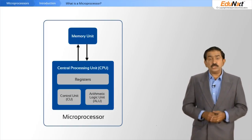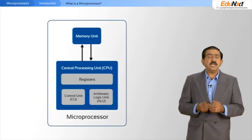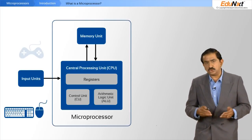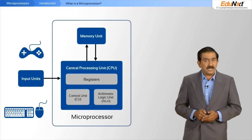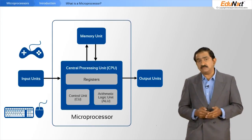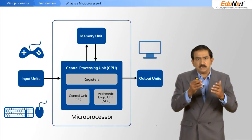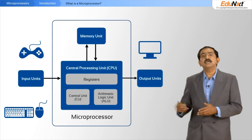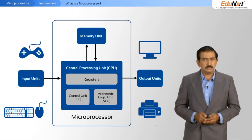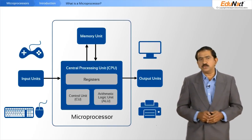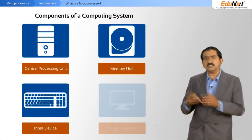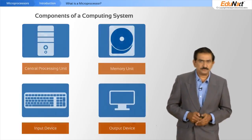A microprocessor on its own has no meaning. You need to connect input devices — devices like a keyboard, a mouse, a joystick, and so on — and you need to have various output devices, typical ones being the monitor and a printer. Together this becomes a computing system — a computer. You will see the similarity between this and your personal computer at home: it has a CPU, it has memory, it has input devices, and it has output devices.